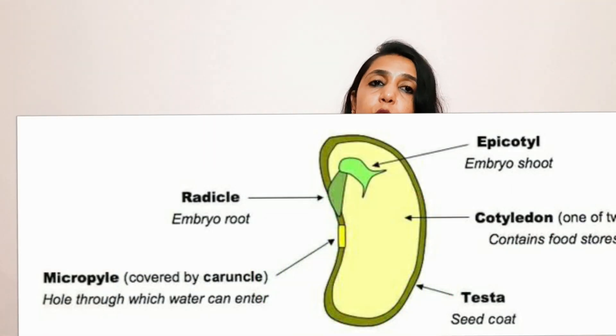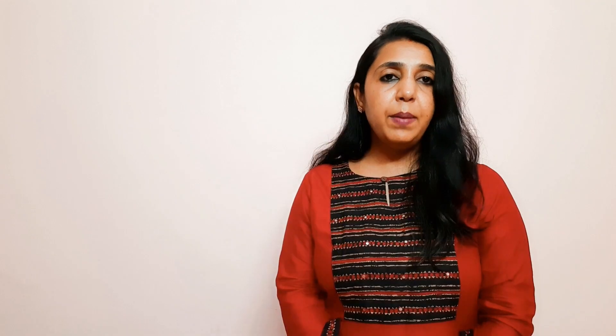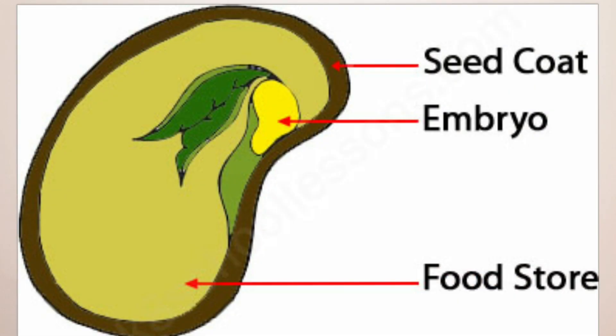So here we have covered the structure of a seed. Every seed has three parts: first is the seed coat, which protects the seed from damage; second is the cotyledon, which provides nutrition to the embryo; and third is the embryo, from which the roots and shoot grow.